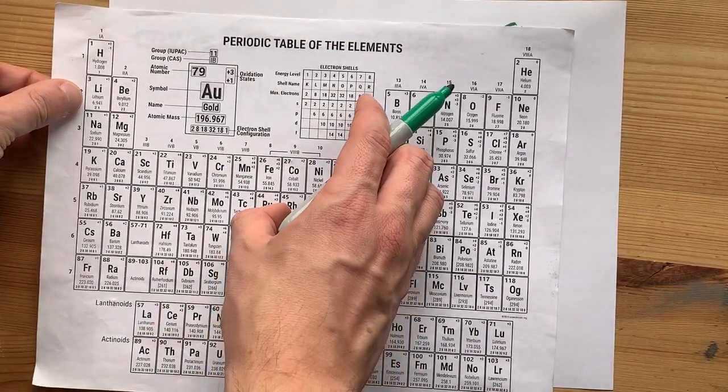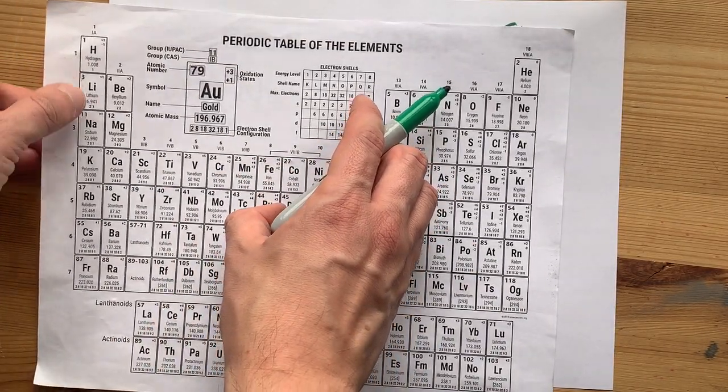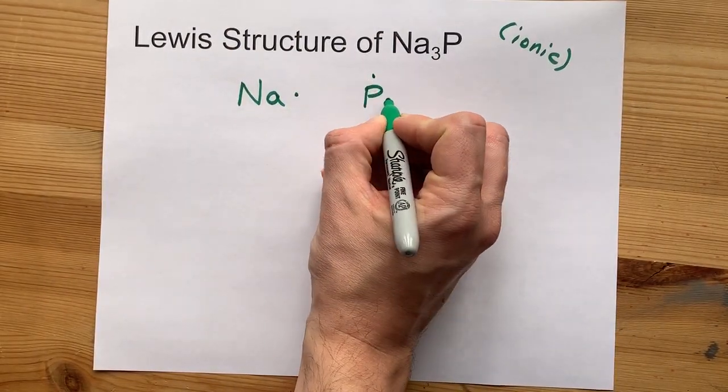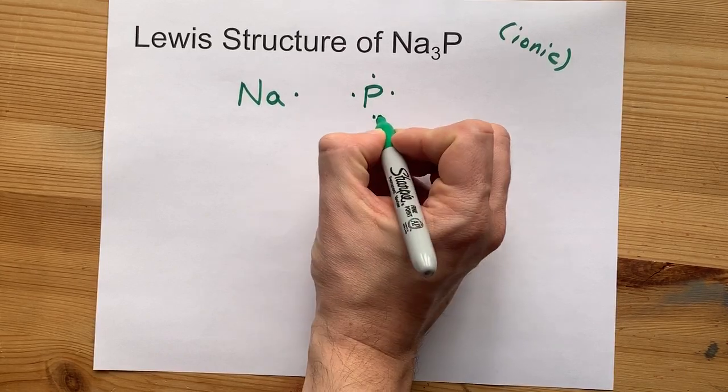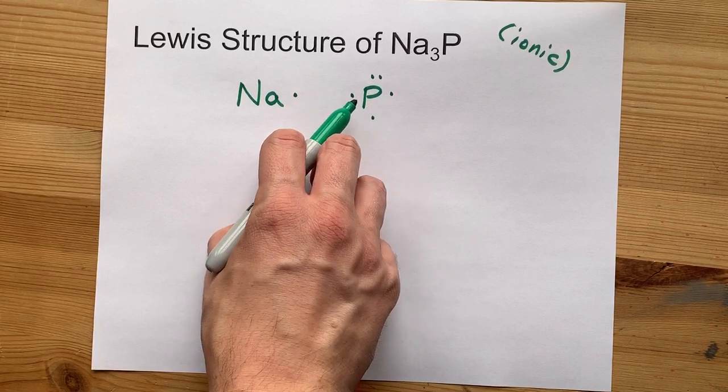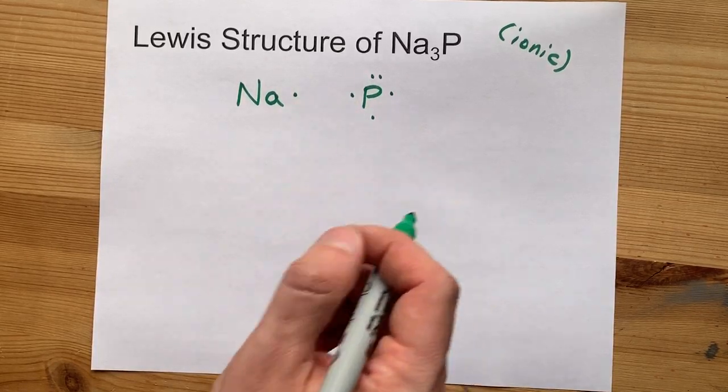Phosphorus is in group 15. That 5 is what tells me it brings 5 valence electrons with it. 1, 2, 3, 4, 5. Notice I spread them out north, east, south, west before I started doubling them up.